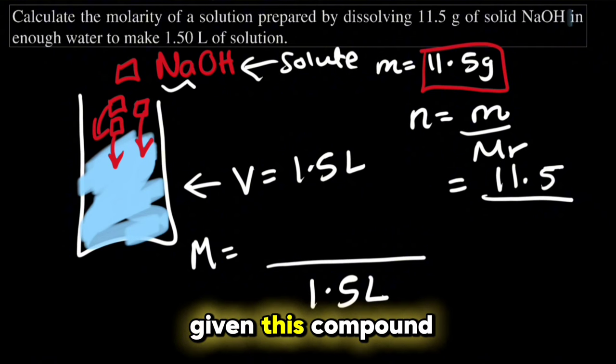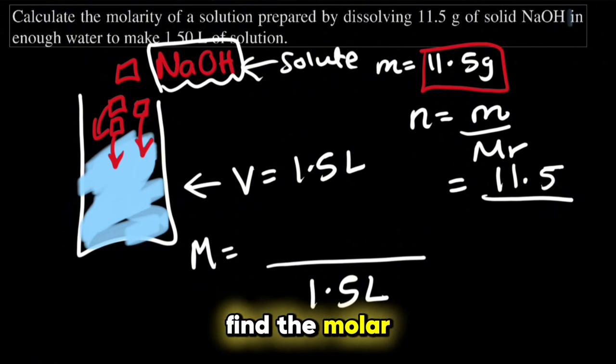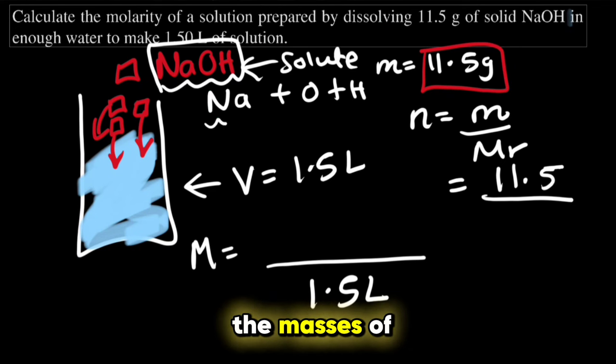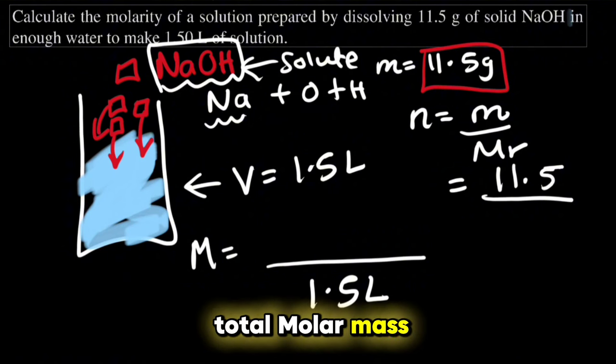Now we are given this compound right over here. How can we find the molar mass? Well when we have Na plus O plus H, we will add the masses of each one to get the total molar mass.